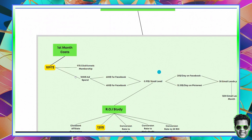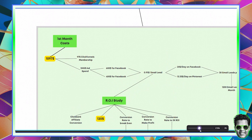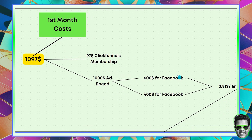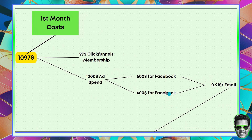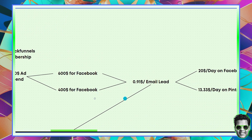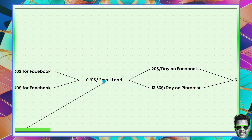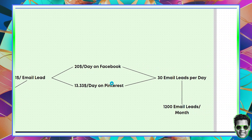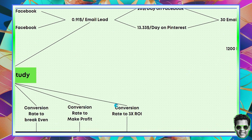The financial analysis works like this. The cost is $1,097 for the first month: $97 for a ClickFunnels membership and $1,000 in ad spend — $600 for Facebook and $400 for Pinterest, which is $20 per day on Facebook and $13.33 per day on Pinterest. The cost is $0.91 per lead. The target result is 30 email leads per day, amounting to 1,200 email leads per month.